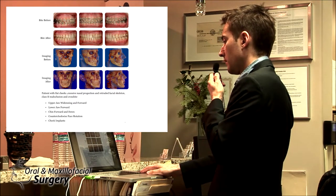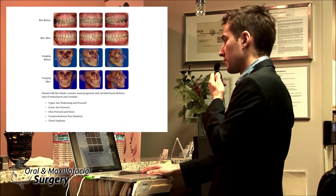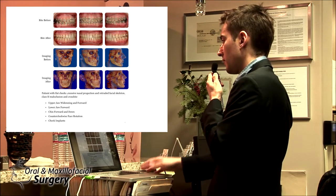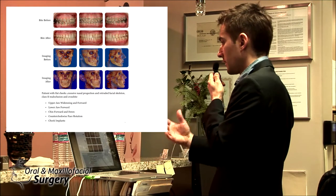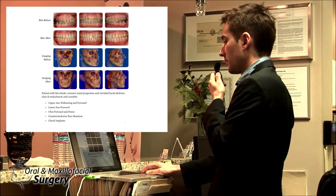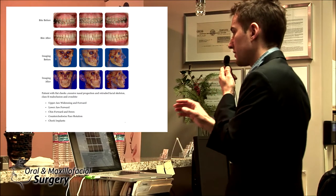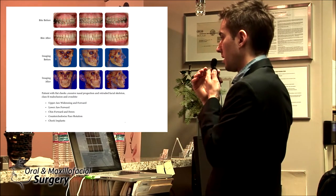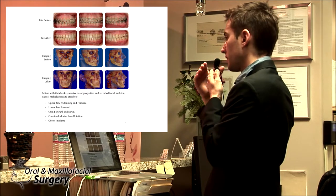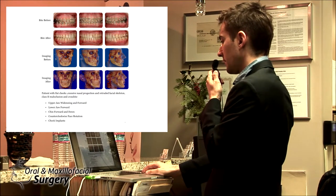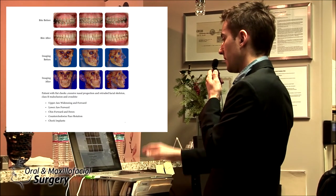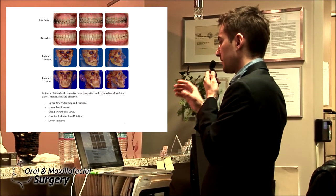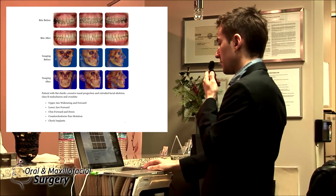I didn't know too much about condylar resorption then. Now we have more knowledge and I probably would not recommend the positioner. You want to have retainers that do not have any plastic or wires between the teeth. Acrylic is okay on the lingual surface and palatal, but nothing in between. The best retention is the big cusps and overjet that locks the bite.